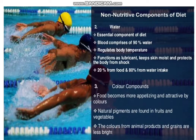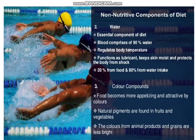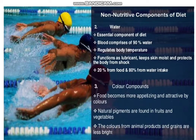The next non-nutritive component is the Color component. Food becomes more appetizing and attractive by its colors. Natural pigments are found in fruits and vegetables. The color from animal products and grains is less bright.